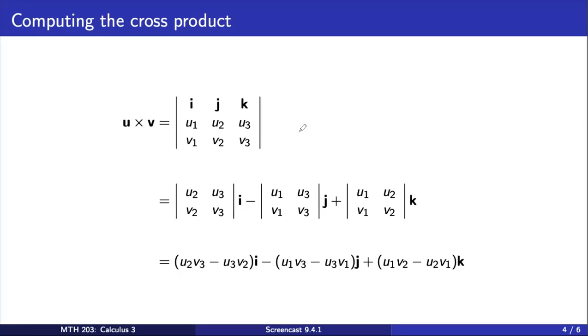We do something similar for j. If we cross out the column and row containing j, we are left with these entries. Putting those together gives us this 2×2 matrix that we multiply with j. Note that this term is always subtracted from the first term.